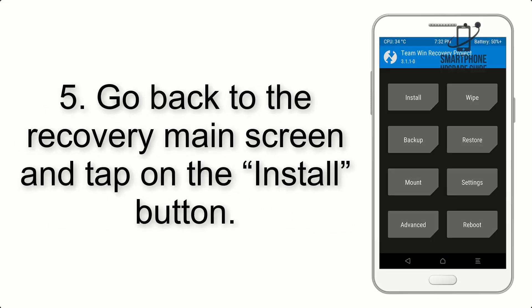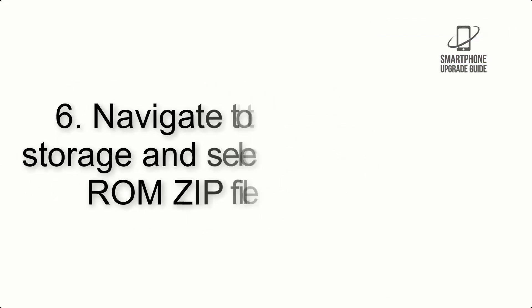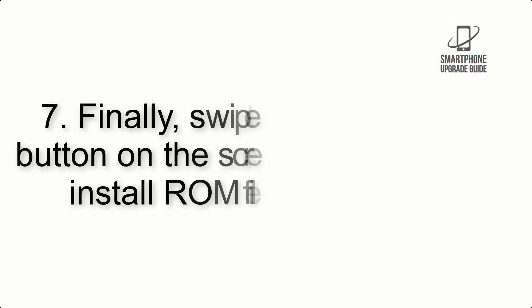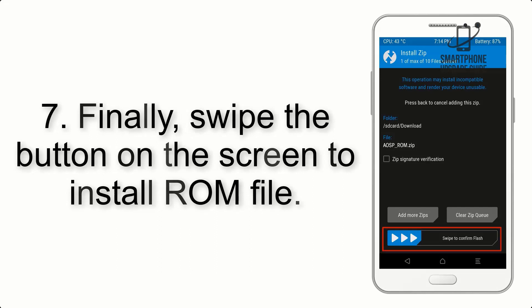Step 5: Go back to the recovery main screen and tap on the Install button. Step 6: Navigate to the storage and select the ROM zip file. Step 7: Finally, swipe the button on the screen to install the ROM file.